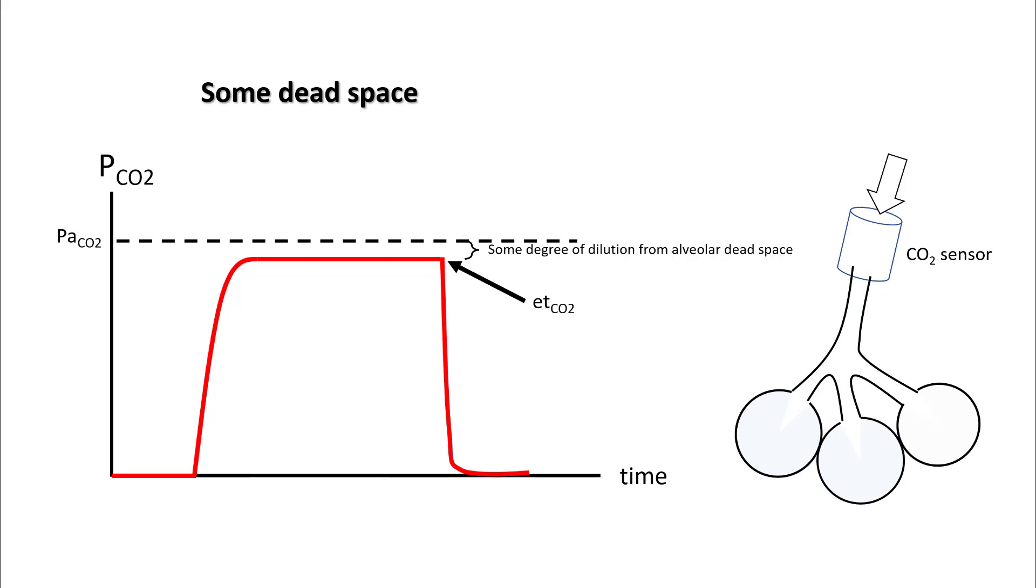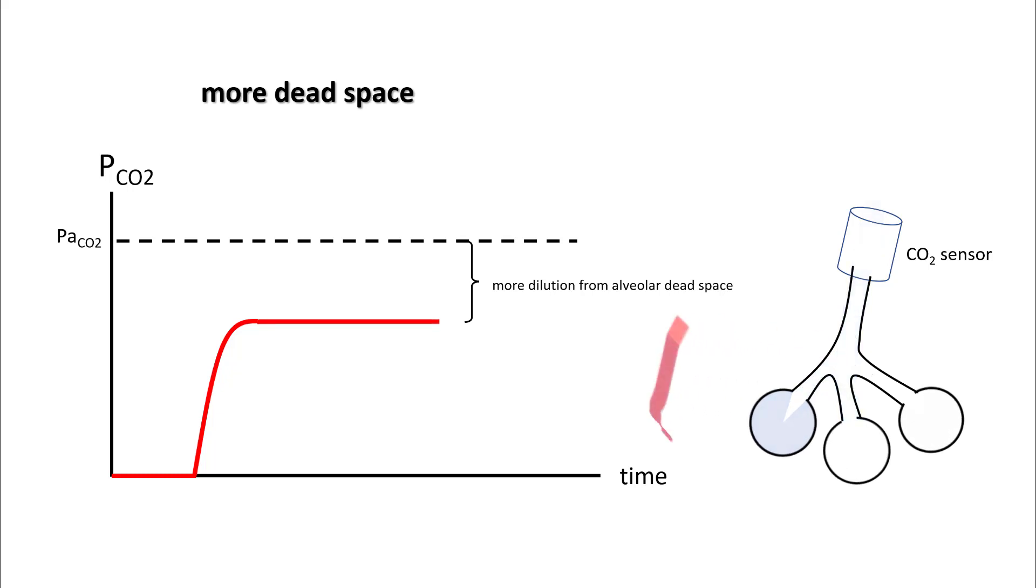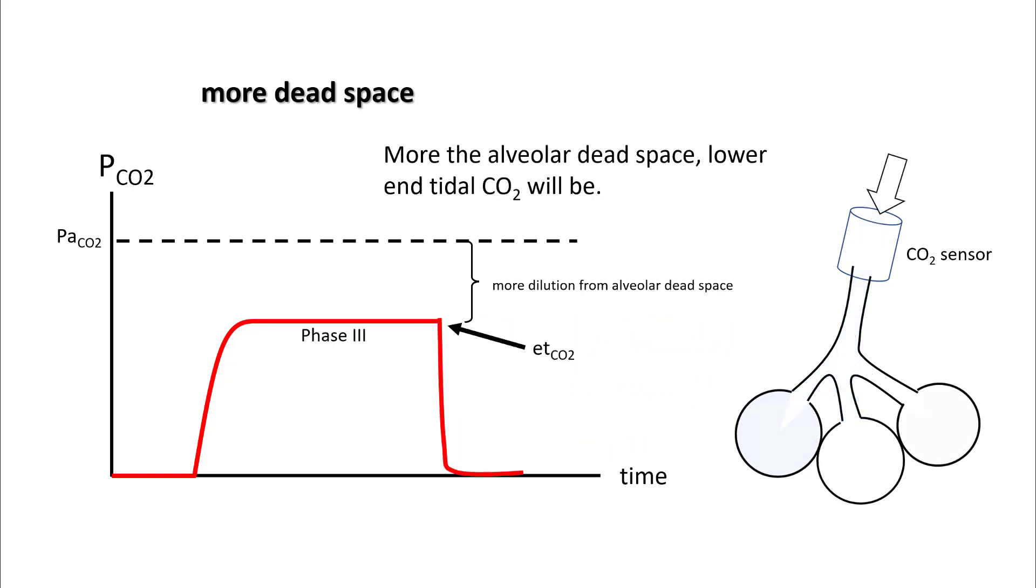If you add more dead space, there will be more dilution of the alveolar CO2 by the dead space alveoli, so your end-tidals will be even lower. The more alveolar dead space, the lower end-tidal CO2 will be. One thing we've assumed in this scenario is all alveoli must empty simultaneously. Now this is not always the case.